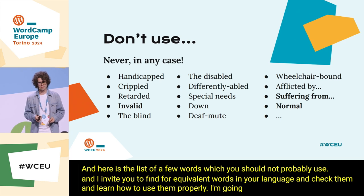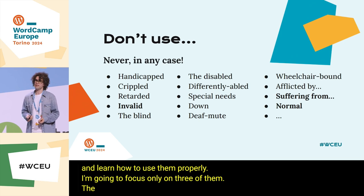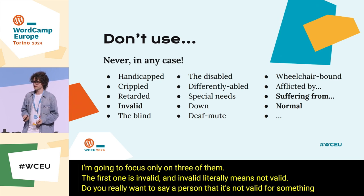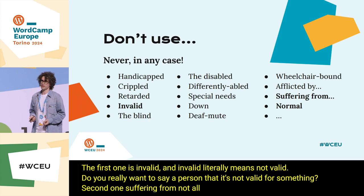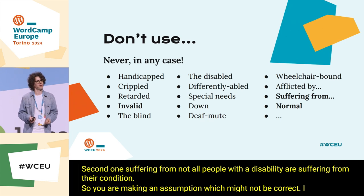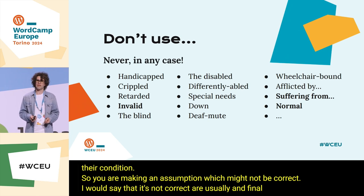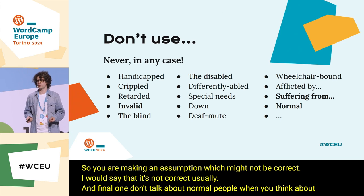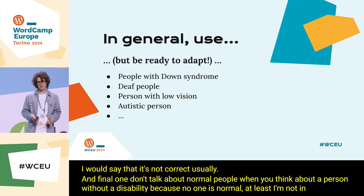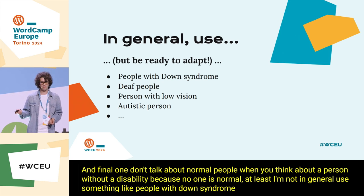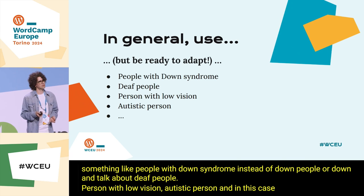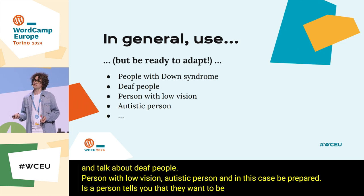I'll focus on three of them. First: 'invalid' literally means not valid — do you really want to say to a person that they're not valid? Second: 'suffering from' — not all people with a disability are suffering from their condition, so you're making an assumption that is likely not correct. And finally: don't talk about 'normal people' when referring to a person without a disability, because no one is normal. Use language like 'people with Down syndrome,' 'deaf people,' 'person with low vision,' or 'autistic person.' And be prepared to change how you refer to someone if they tell you they prefer a different term.